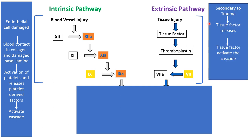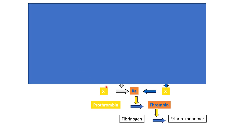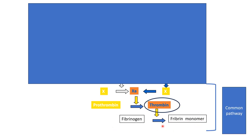The extrinsic pathway is called extrinsic because the injury is from outside the blood vessel. Secondary to trauma, tissue factor is released into the blood vessel, activating the extrinsic pathway. It acts on factor 7, activating it, and factor 7a then acts on factor 10. After this, the common pathway is activated — both extrinsic and intrinsic pathways activate factor 10. Factor 10a acts on prothrombin, converting it into thrombin, and thrombin acts on fibrinogen, converting it into insoluble fibrin clot.